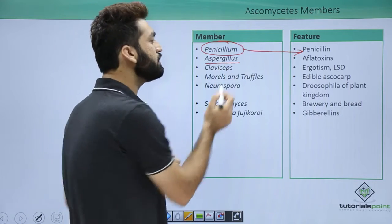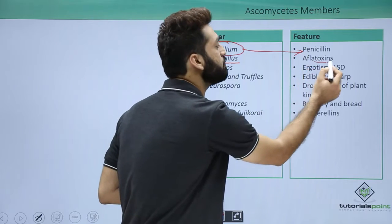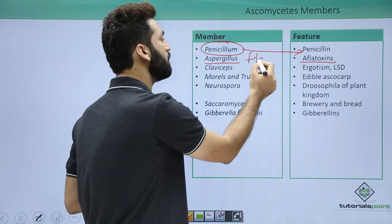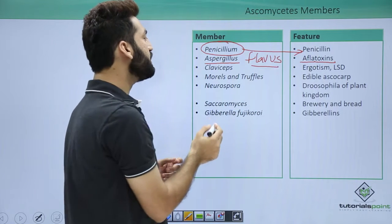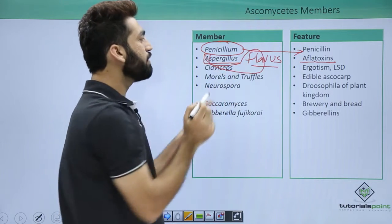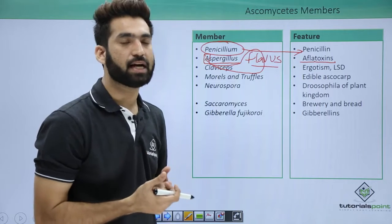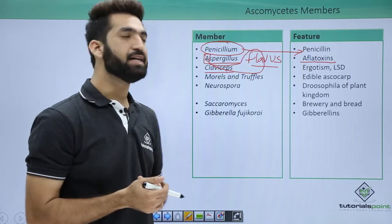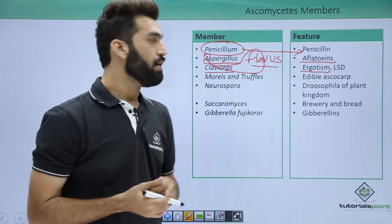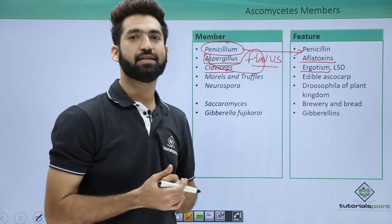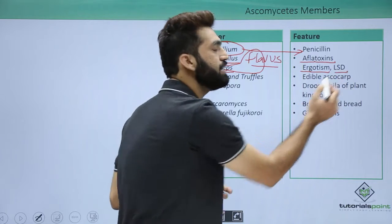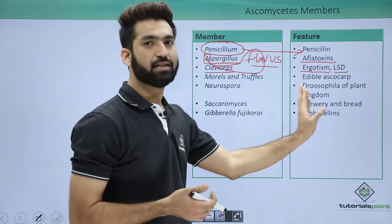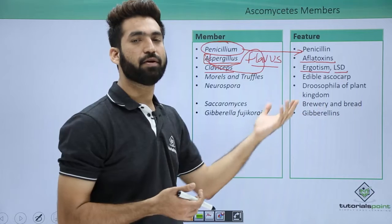Aspergillus flavus produces toxins called aflatoxins. Aflatoxins are toxic and are basically carcinogens. When you talk about Claviceps, the species is Claviceps purpurea, which is related to ergot disease in rye — the disease is called ergotism. Claviceps purpurea also produces lysergic acid diethylamide, which is called LSD, and LSD causes hallucinations.